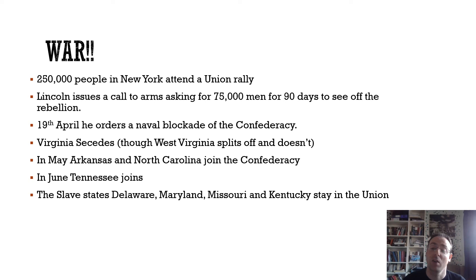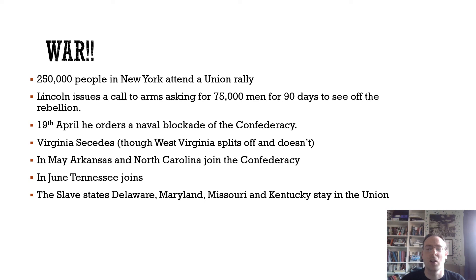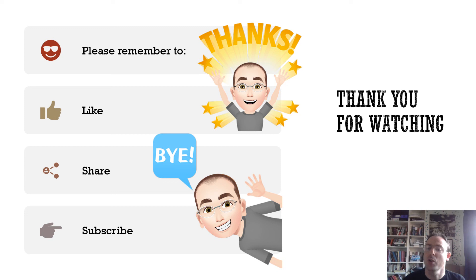This is also really important geographically, because Washington D.C. borders Maryland and Delaware in particular — giving those states real strategic importance. Thank you very much for watching. We have reached the point of the war, so the next video will look at the early stages and early battles. Please remember to like, share, and subscribe.